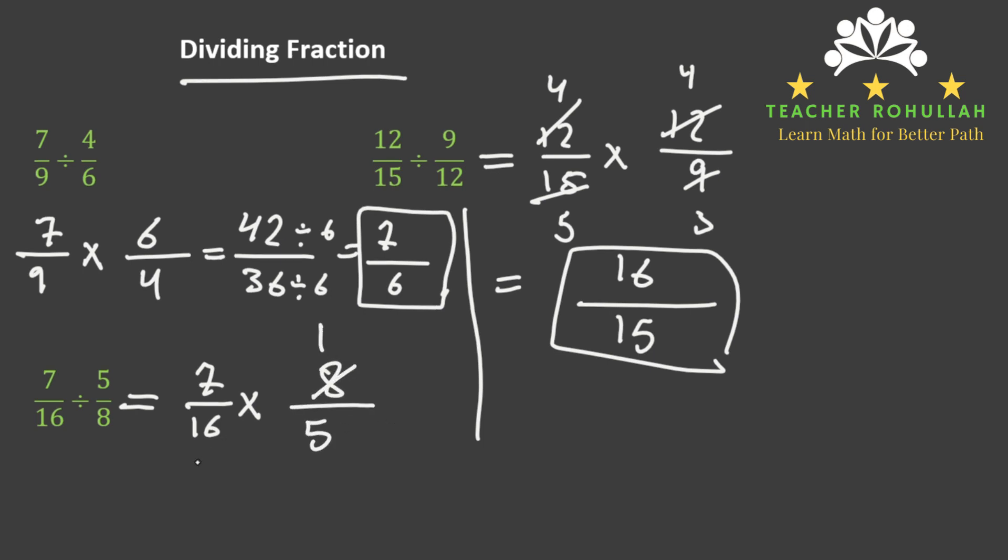1 times 8 is 8. 2 times 8 is 16. So 1 times 7 is 7, and 2 times 5 is 10, which is already in the simplest form.